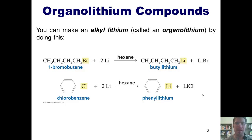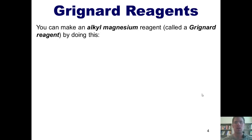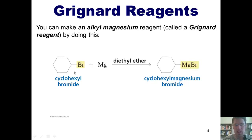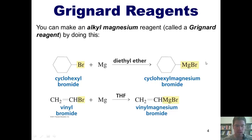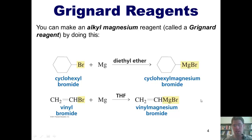You might ask why you would ever want to make an organolithium compound. Don't worry, I'll show you that momentarily. But first, I also want to show you how to make a Grignard reagent — an alkyl magnesium reagent. You take any alkyl halide, such as an alkyl bromide, react it with magnesium metal, and the metal inserts itself between the hydrocarbon chain and the bromine. Here's another example using vinyl bromide reacted with magnesium. Note: these reagents are called Grignard reagents — pronounced Grignard, not Grignard.